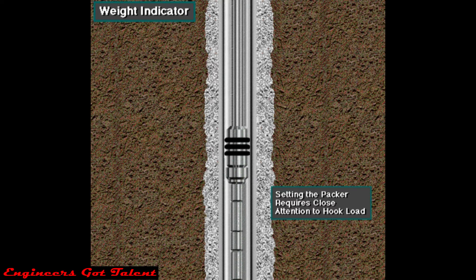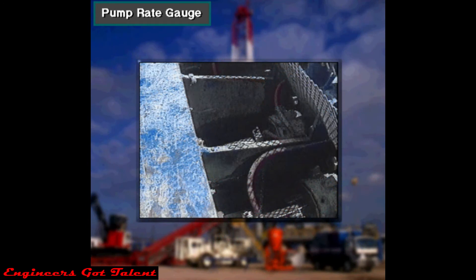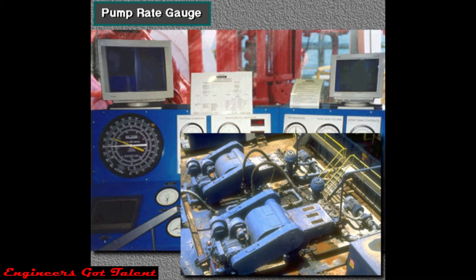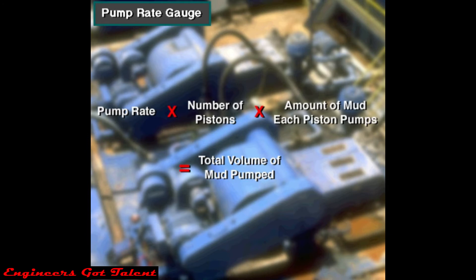Because the weight indicator is so precise, the driller can use it to monitor the operation of downhole tools requiring small variations in weight. The pump rate gauge shows the number of times one mud pump piston moves per minute. This console has two pump rate gauges because the rig has two mud pumps. The driller can determine the total volume of mud being pumped by multiplying the pump rate by the number of pistons in the pump times the amount of mud each piston pumps.